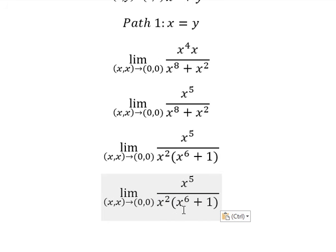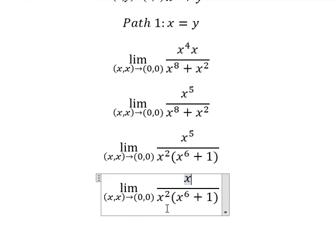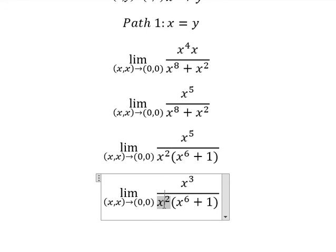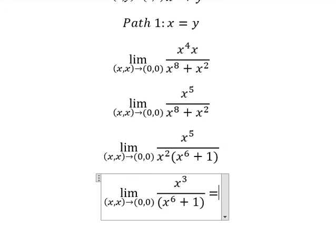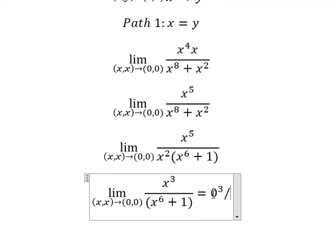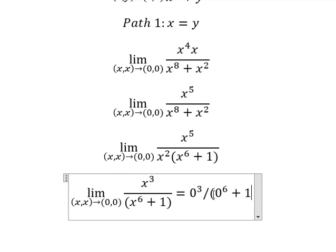And now we need to simplify x squared on numerator and denominator. When x approaches zero, this one you got zero, this one you got zero. And we have zero here.